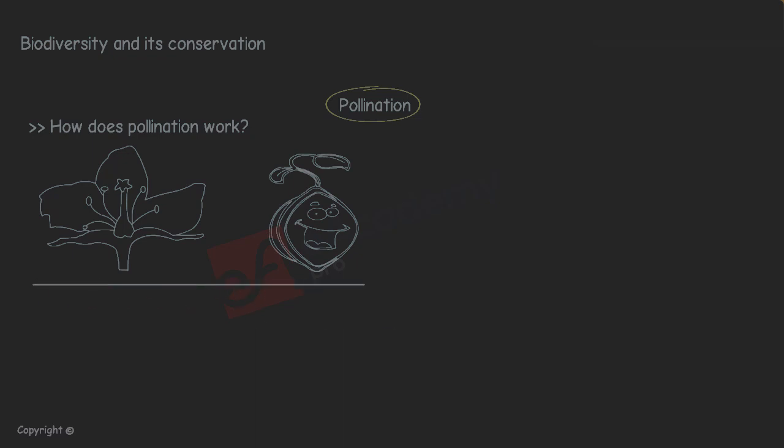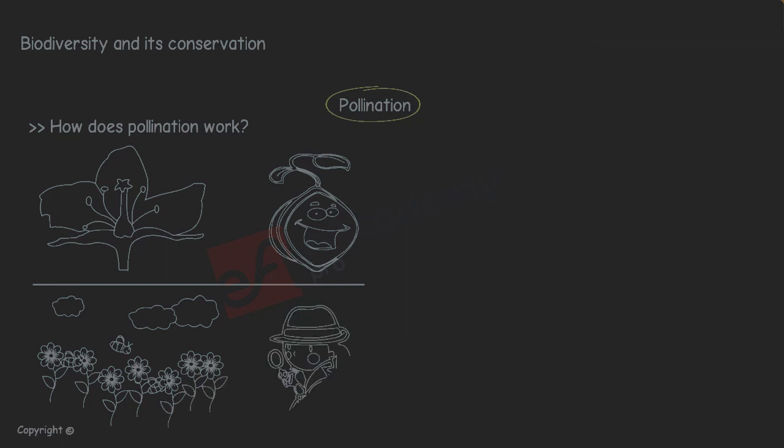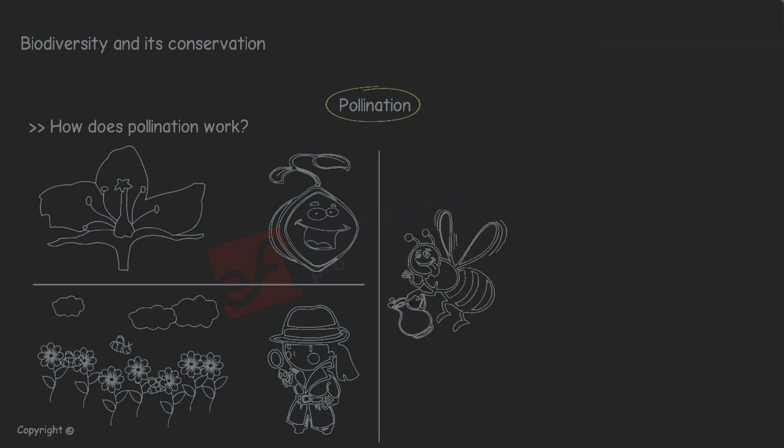Have you seen how bees surround your garden? If you try to observe them carefully, bees go from one flower to another as they try to gather nectar, a sugary drink from the flowers.